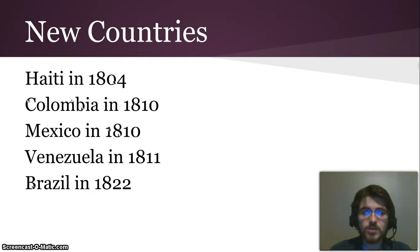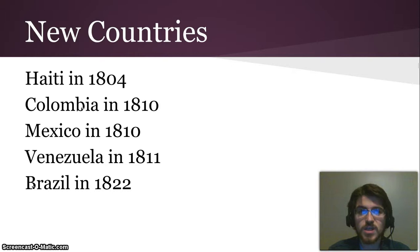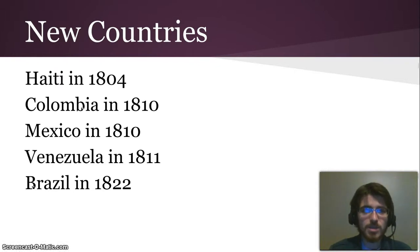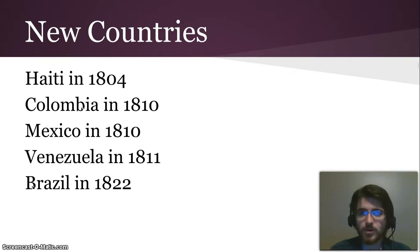There are a bunch of new countries that came around. These are the important ones you need to know for your test, but also key pieces of evidence for your debate argument: Haiti in 1804, Colombia in 1810, Mexico in 1810, Venezuela in 1811, and Brazil in 1822 all achieved political independence from the countries that used to control them — no longer child countries stuck to a parent country sending them all of their trade goods.